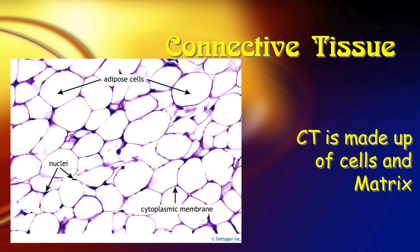So connective tissue is made up of cells and matrix. As you examine different connective tissues, you're going to find that how much of each varies. For instance, in this picture of adipose tissue, we actually have mostly cells — very little matrix.